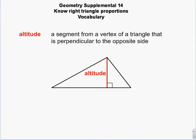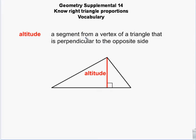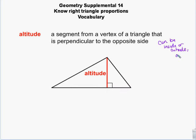An altitude can be in any triangle. The altitude is from the vertex, and it's perpendicular to the opposite side. It can be inside or outside of a triangle. It can also be on the side.